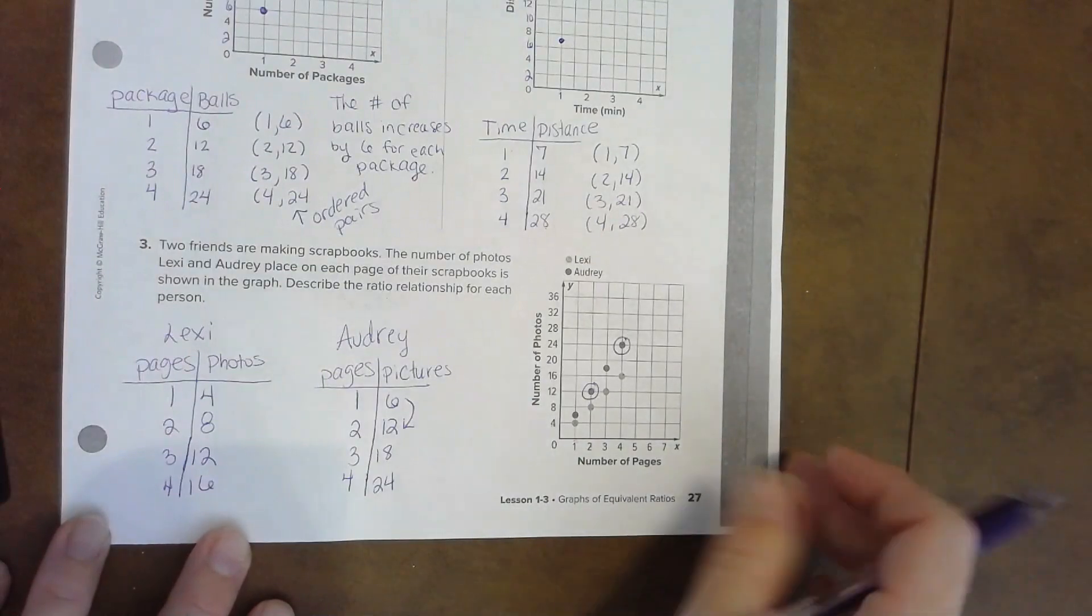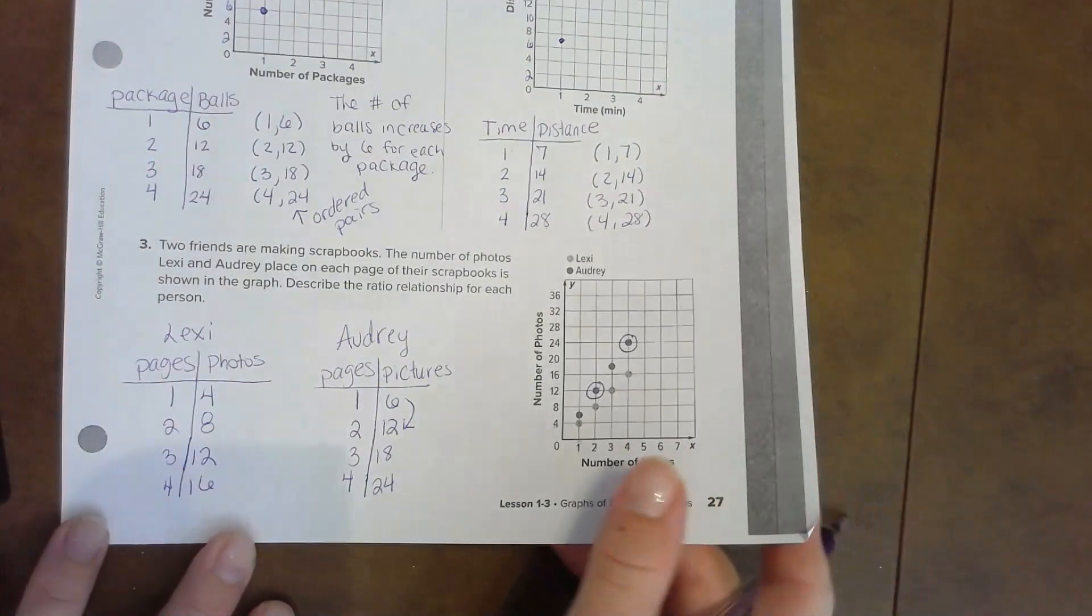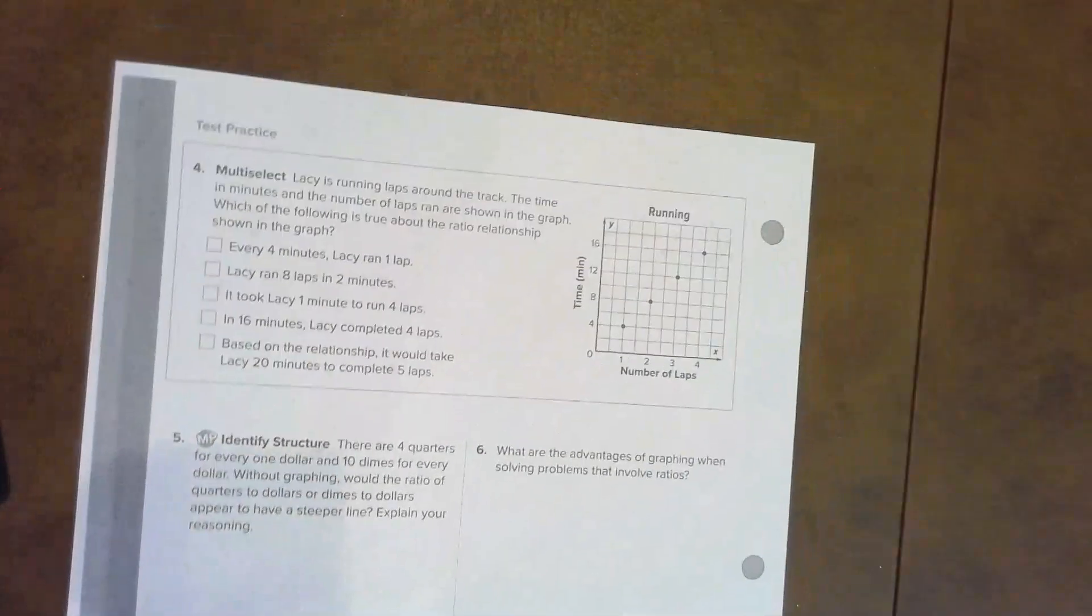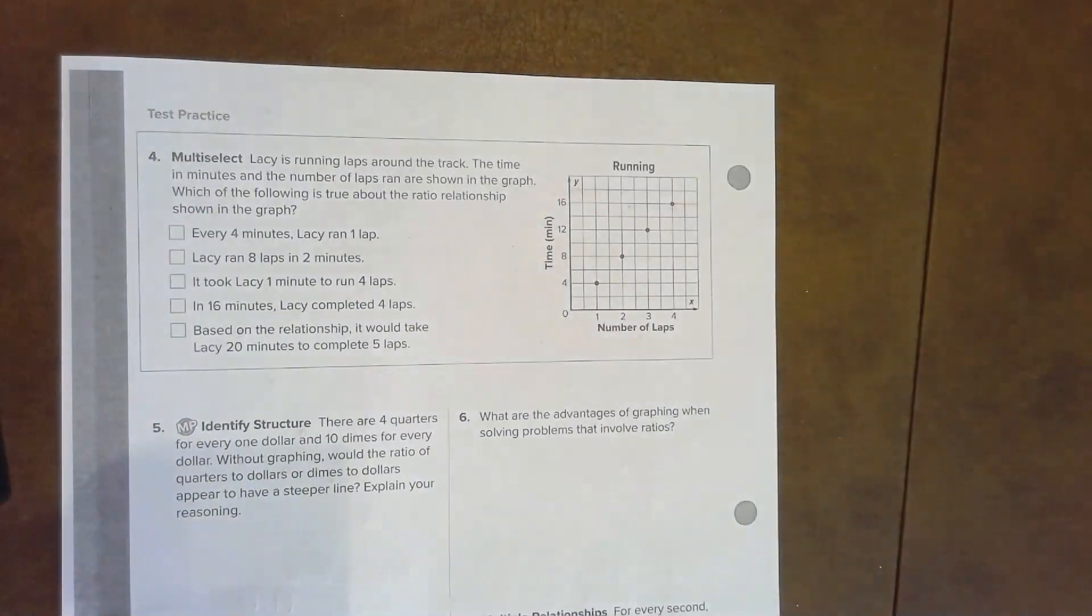That's it. Let's flip the page. Number four at the top is a multi-select problem, so you're going to read the problem to yourself and then let's figure out which of the following is true about the relationship. Go ahead and pause the video and read this to yourself. All right, now that you've read it, let's start selecting all of the things that match the graph to the right.